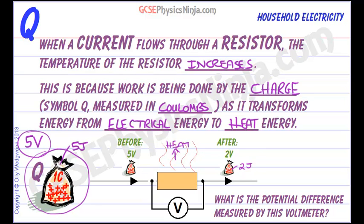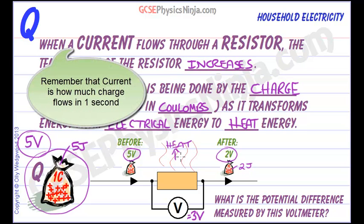We use a voltmeter to measure the potential difference — the drop in voltage across a component — and that's a measure of the drop in energy that each coulomb has as it goes through. So here we start off with 5 volts and at the other end we have 2 volts. The potential difference is 3 volts, telling us we've lost 3 volts across the resistor and that energy has been transformed to heat energy. That's all about charge and how, when it flows through a resistor, it transfers electrical energy to heat energy.